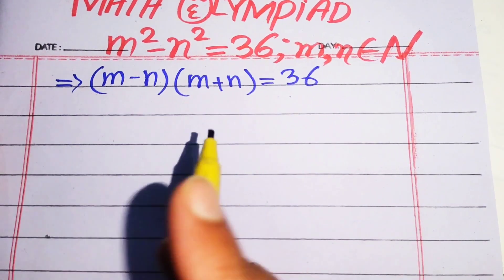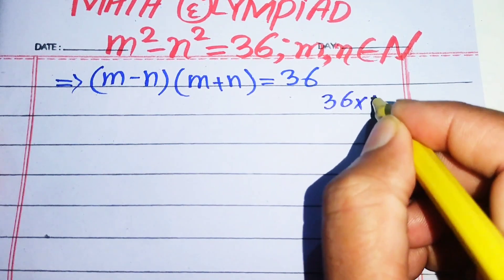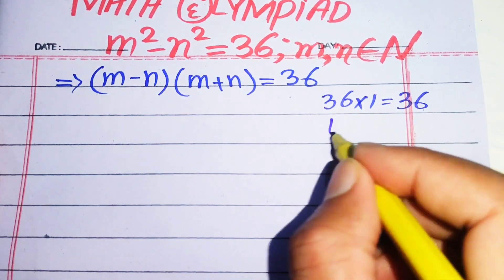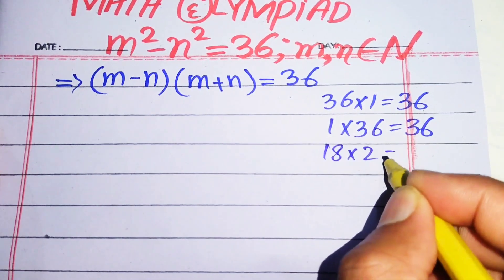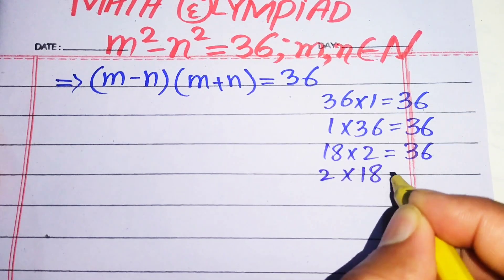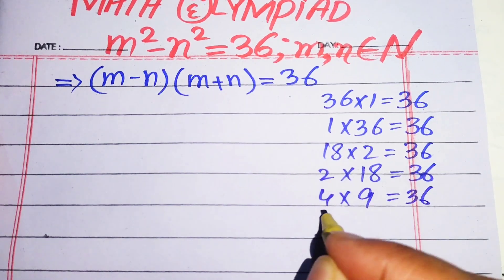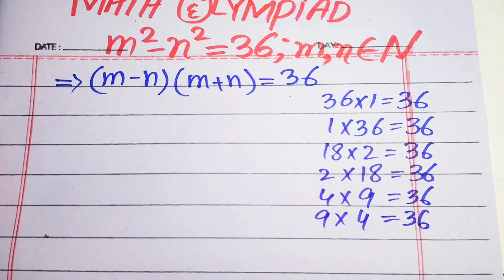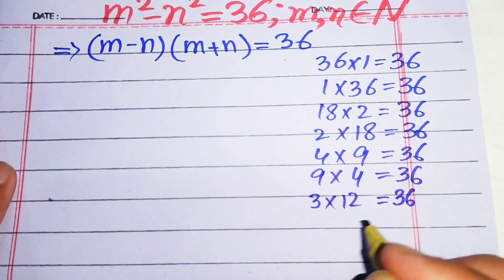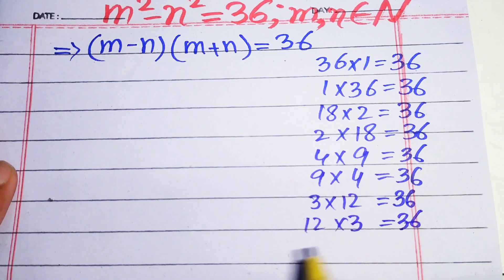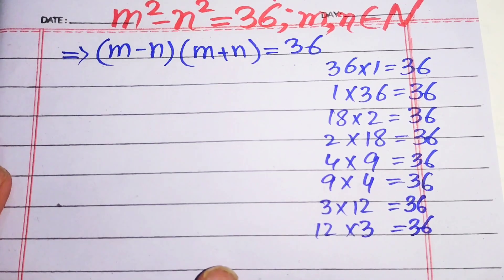First we find all possibilities in which the product of two numbers equals 36. The possibilities are: 36×1, 1×36, 18×2, 2×18, 4×9, 9×4, 3×12, and 12×3. So we have eight possibilities in which the product of two numbers is 36.